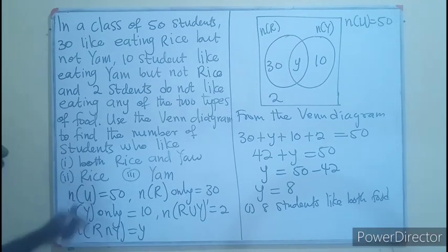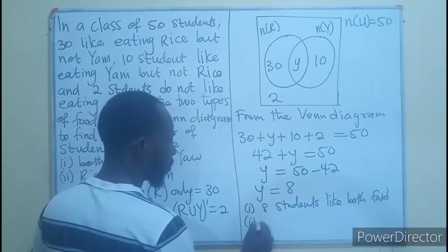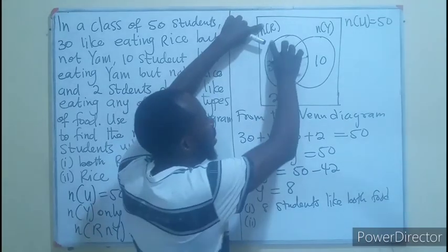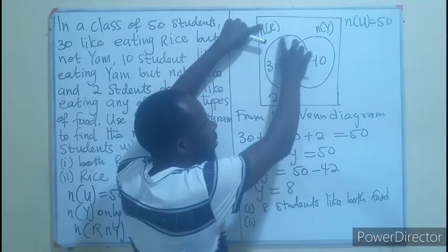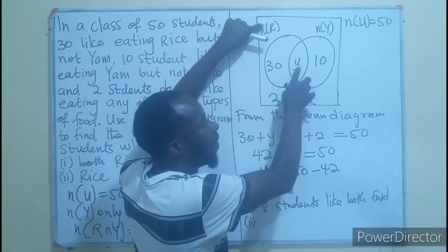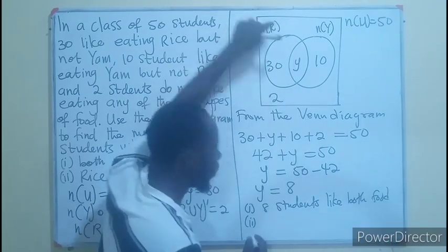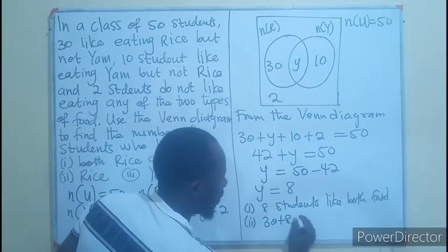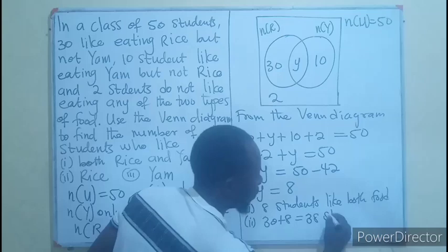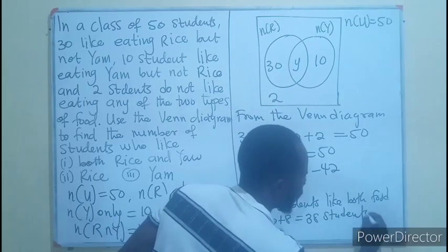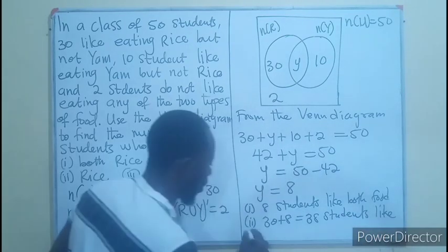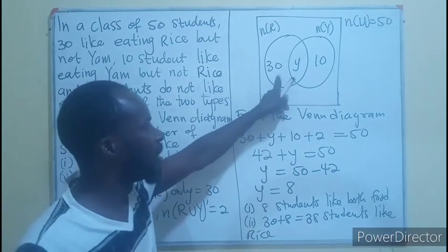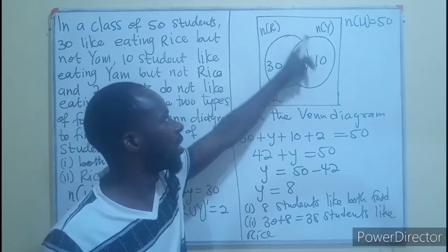The second one is rice. We are looking for rice students. And in the beginning, I said that this rice here represents the whole of this region. This region which is rice only and the intersection. So, we are going to have 30 plus 8 equals 38 students like rice.